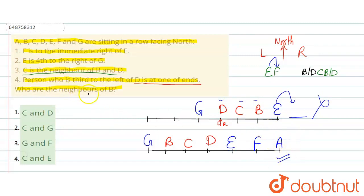Now, the question is: who are neighbors of B? B's neighbors are G and C. G and C is your option number two. So option number two, C and G is the correct answer. Thank you.